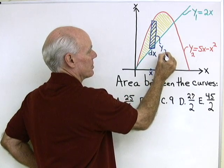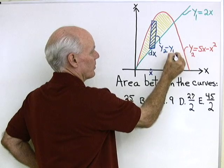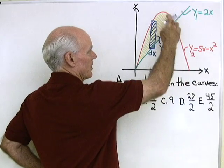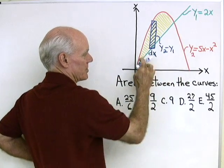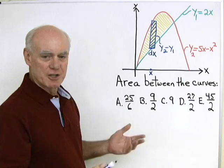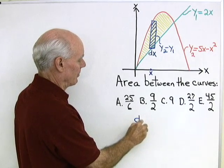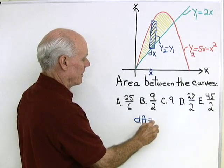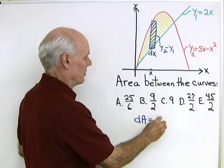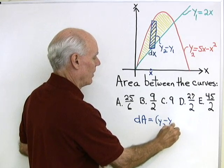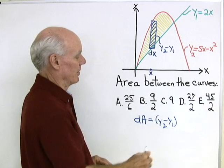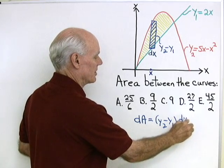It's going to have a height of y2 minus y1. The height is y2 minus y1, where y2 is this red curve on top and y1 is the green curve on the bottom. The element of area is y2 minus y1, the height of that rectangle, times its thickness dx.